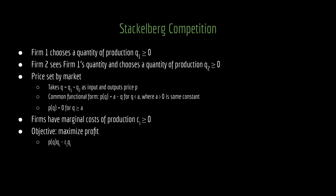To recap, the prices are set by the market. They take the total quantity of production Q1 and Q2 as input and output a price P. We're going to use that common functional form of some constant A minus the total quantity of production. We'll have firms with marginal cost of production CI greater than or equal to 0. And as always, the firms want to maximize their profit, and all they can do to achieve that is choose quantities of production, this time sequentially rather than simultaneously.